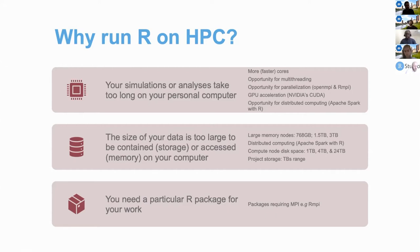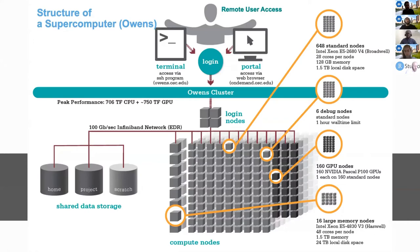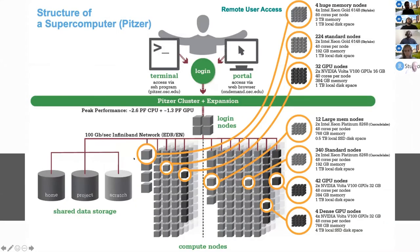Let me take a couple of minutes to show you an example of a cluster — let me focus on the cluster called Pitzer. I mentioned we have two main clusters: Owens and Pitzer. The structure is quite similar: you have a component where the user logs on to the cluster, either using a terminal SSH client or by opening the web portal on-demand.osc.edu. This portal gives you access to interactive applications or a shell terminal to access compute nodes. When you log on to OSC, the first thing you reach is the login nodes, which are not for computation — they have about six processor cores and are for writing scripts and optimizing code. The real power comes from the compute nodes.